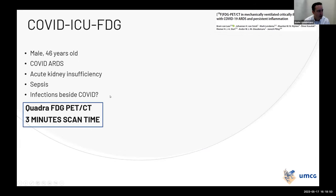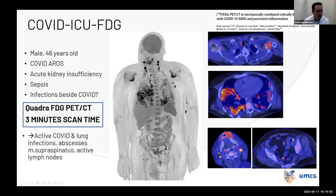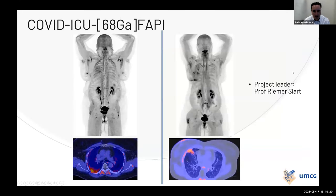Another COVID case: a 46-year-old with COVID ARDS, acute kidney insufficiency, and sepsis. The scan showed active COVID in both lungs, but also abscesses in the supraspinous regions and active lymph nodes throughout the body. These examples were compiled in a pictorial essay that was recently published. In patients with long-standing COVID, we scan with FAPI — four early examples show specific uptake in the lungs consistent with active fibrosis long after COVID infection.